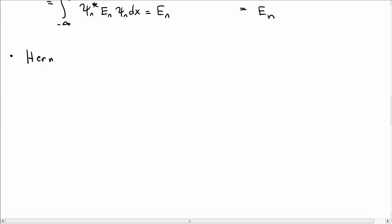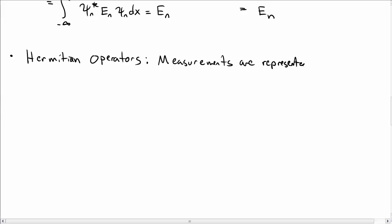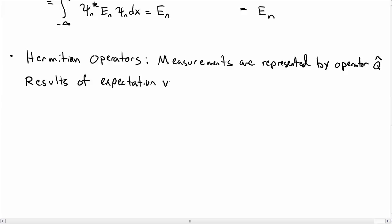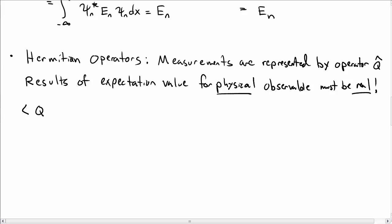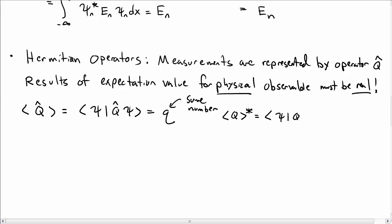I want to talk about the relationship between observables and what are called Hermitian operators. If we have something we're going to measure, we take an expectation value — these measurements are represented by some operator, let's call it q. If we want to make a measurement, we find the expectation value for that operator, which gives a physical observable. If it truly is physical, the result must be a real number — we don't measure complex numbers, we measure real numbers. So the expectation value of q, written as bra psi q-hat ket psi, is going to be some real number.